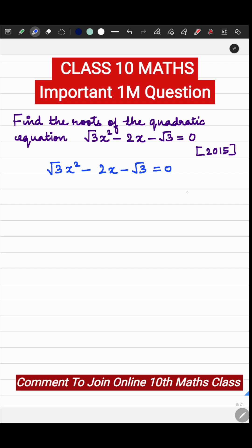So first write what should be the sum and what should be the product. The sum should be the coefficient of x which is minus 2 and the product should be the coefficient of x square multiplied by the constant term.